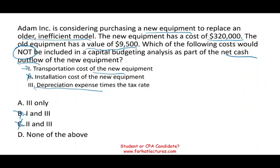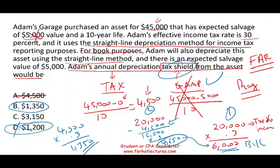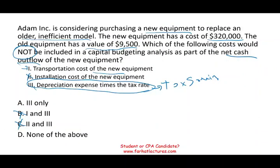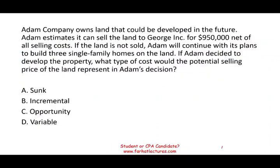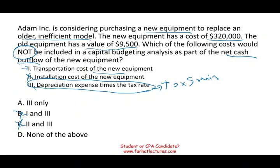So all I need to determine is whether depreciation expense times the tax rate would be included in the net cash outflow or not. I placed these two questions back to back on purpose to illustrate the point: depreciation expense times the tax rate is the tax savings — as I just showed you in the prior problem, this is the tax shield. Because it's tax savings, it cannot be part of the cash outflow. Actually, it's helping you — it's a positive. It's going to save you money on that project. The answer is A, because depreciation expense is not an outflow.